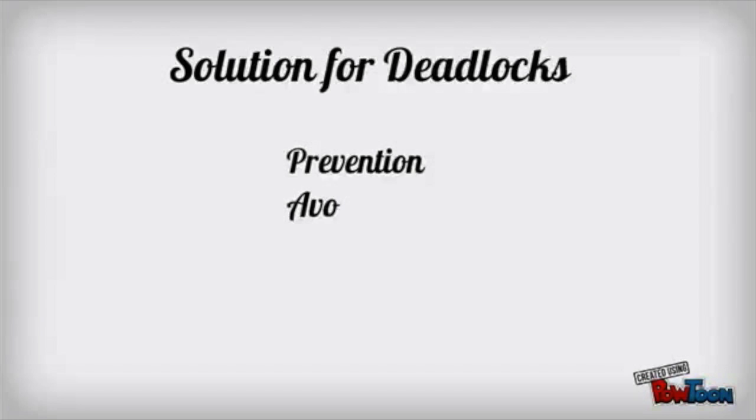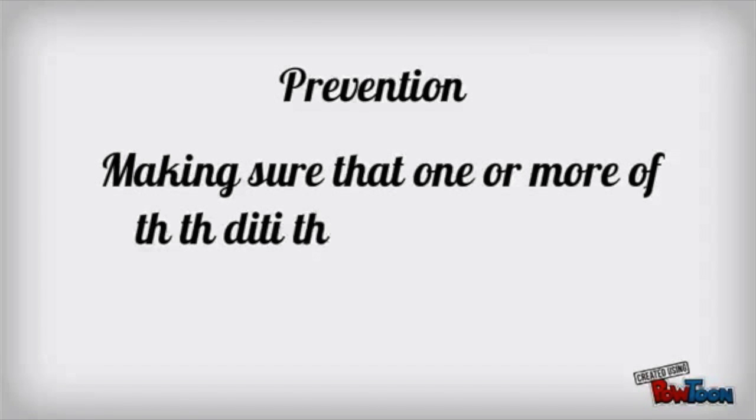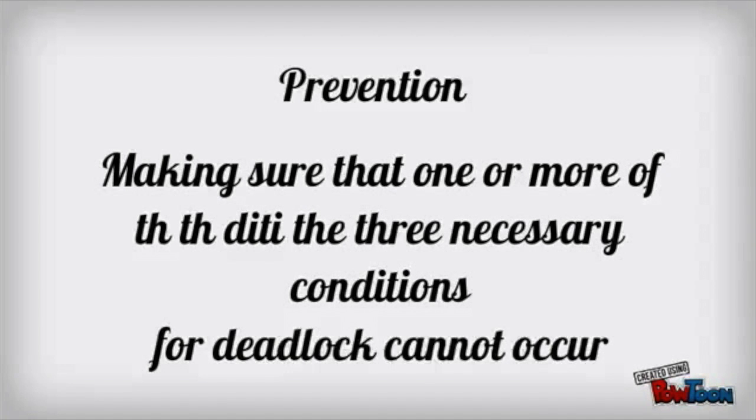So what are the solutions for deadlock and how does the OS deal with deadlocks? The OS takes these steps to counter deadlock which are prevention, avoidance, detection and ignorance. Prevention. How does prevention work? Since deadlock requires three conditions to be fulfilled, prevention works by preventing one of the three conditions to be completed.